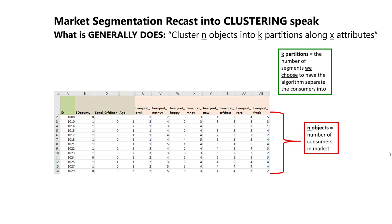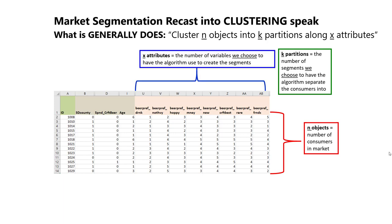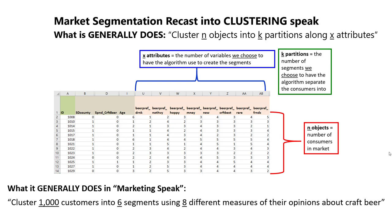What immediately becomes apparent is that the choice of the number of partitions — meaning the number of segments — is something we have flexibility in selecting. The x attributes, shown in the data columns here, are a bunch of survey data collected from craft beer drinkers in San Diego. Each question was scored on a one-to-five point scale, asking people their opinions related to drinking craft beer and preferences for styles. We can recast the k-means phrase into something more understandable: k-means allows us to cluster a thousand customers into six segments using eight different measures of their opinions about craft beer.